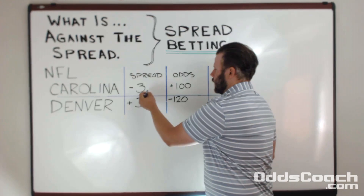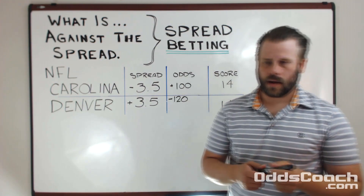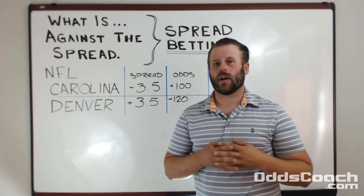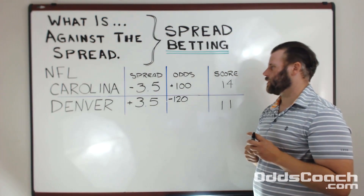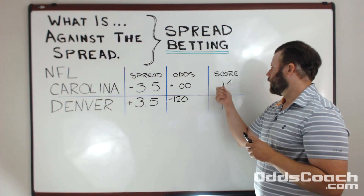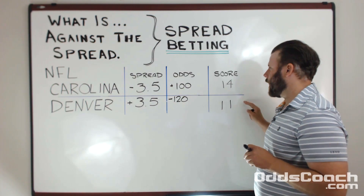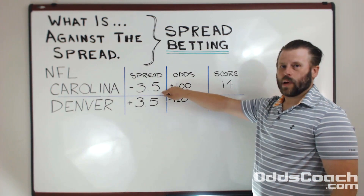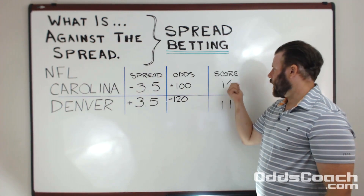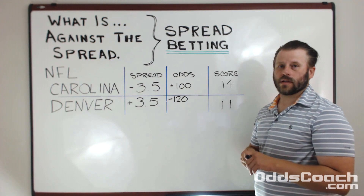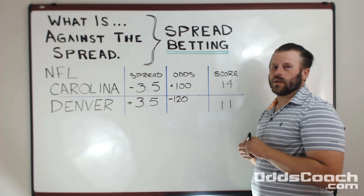Typically you'll see spreads adding a half point. What that means is that no matter what, there's going to be an outcome — there's going to be a winner of this game. So let's take this example: should the spread have been minus three and a half, plus three and a half. If you were to subtract three and a half from 14 you're going to get ten and a half — ten and a half to 11, Carolina loses this bet. Likewise if you add three and a half points you end up with 14 and a half to 14, and Denver wins this bet. So that's what the half point means in the spread — just making sure that you get a result.